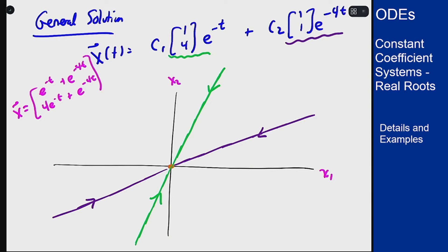At t equals 0 this starts at (2, 5) which will be somewhere up in here, and as t goes to infinity this is also going to go to zero because I only have negative exponentials there.